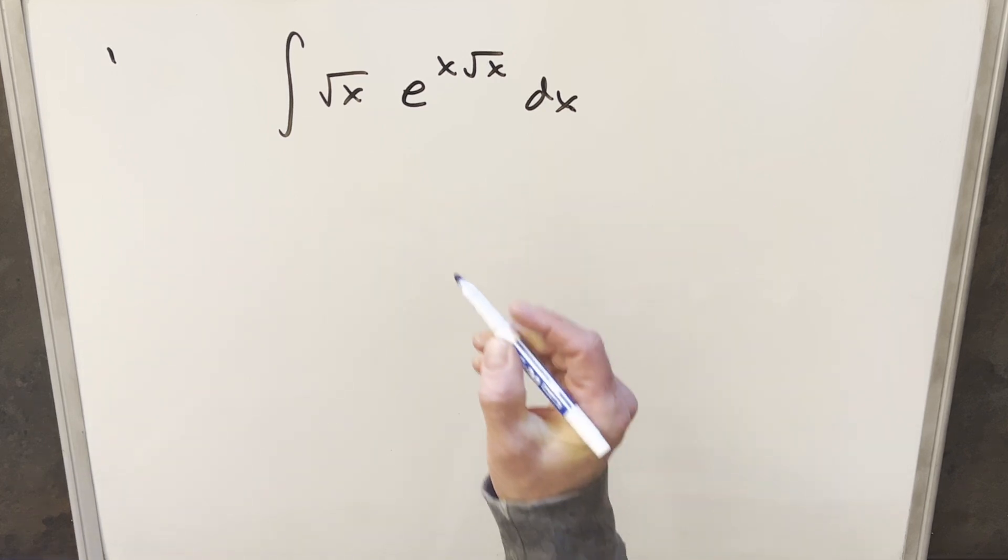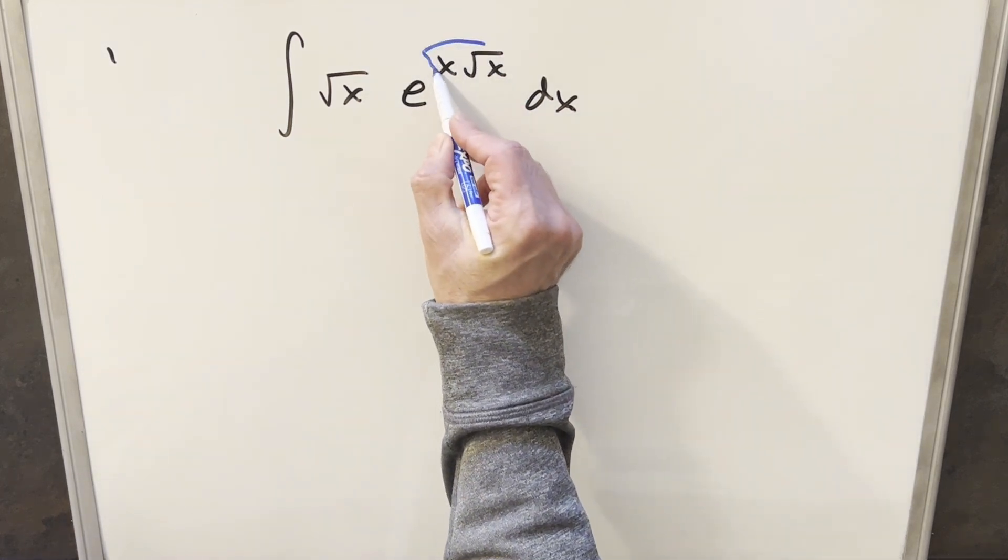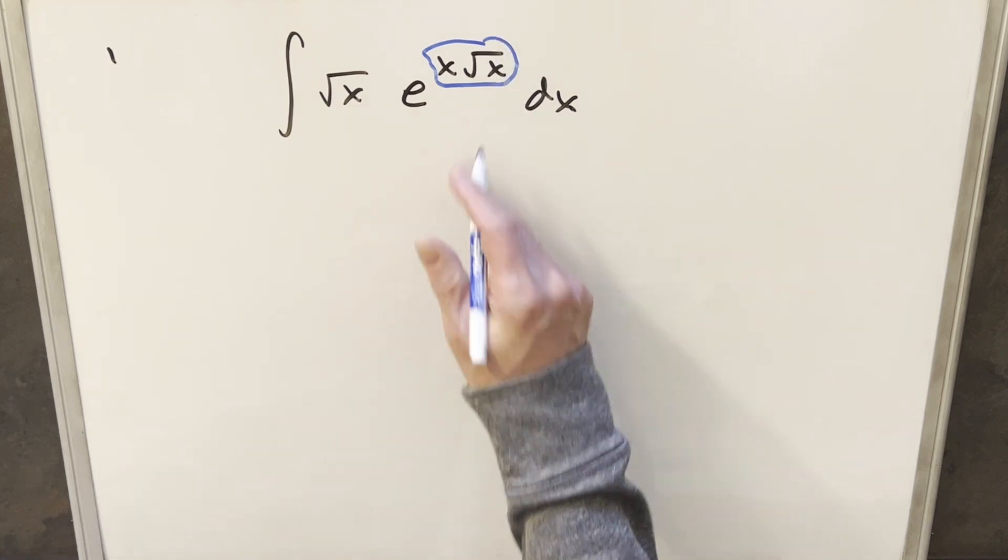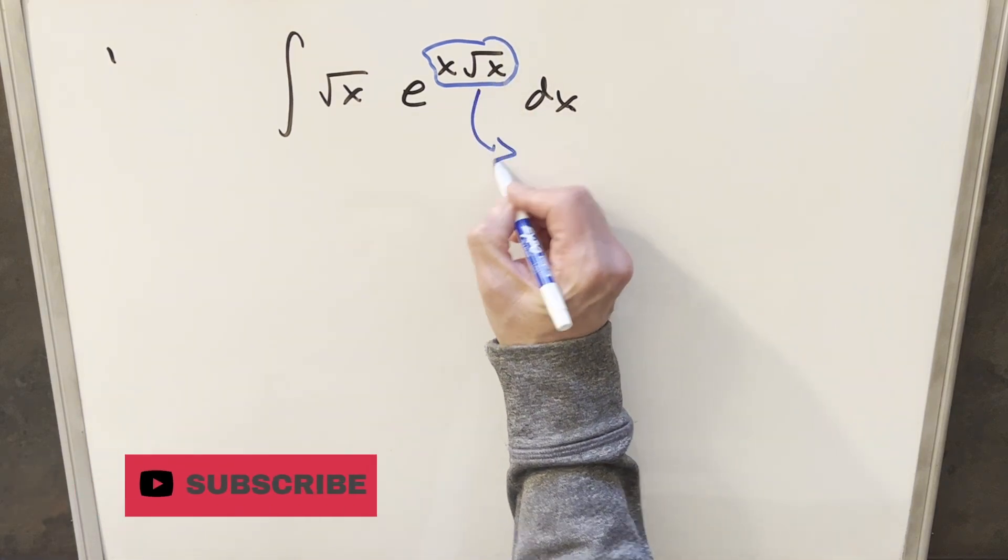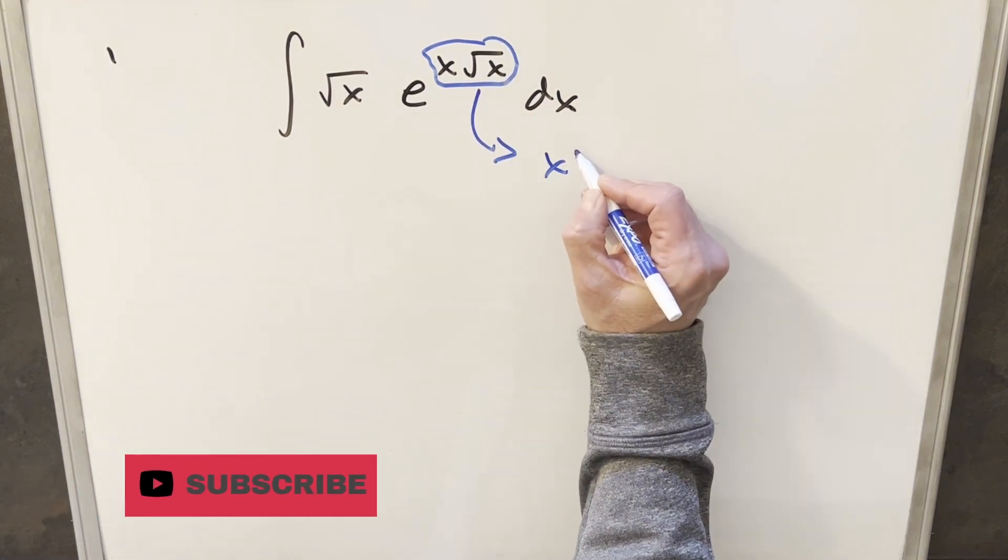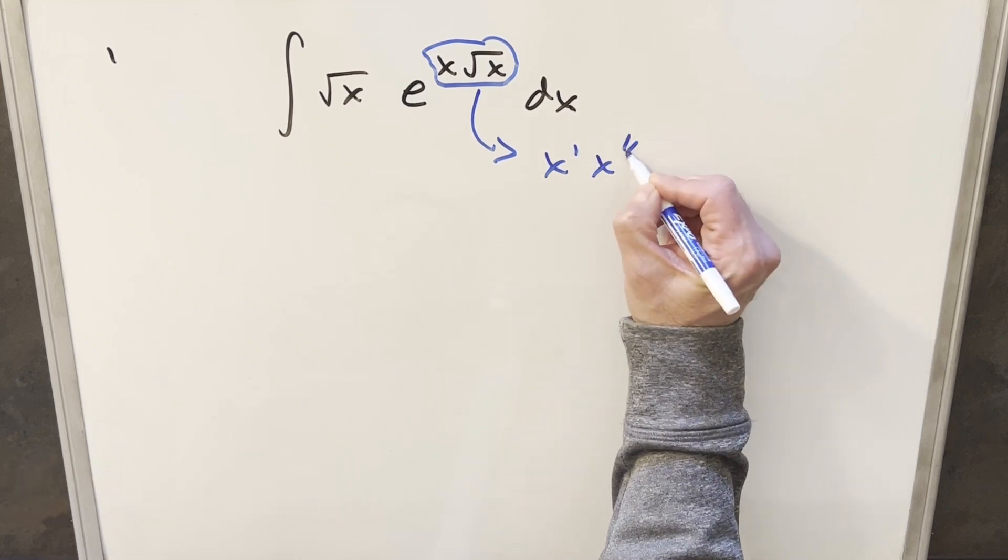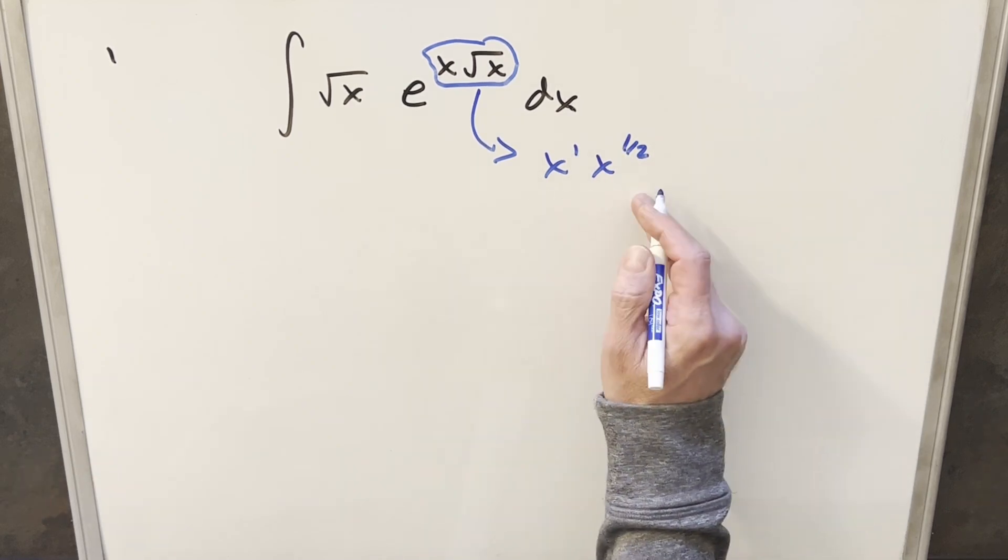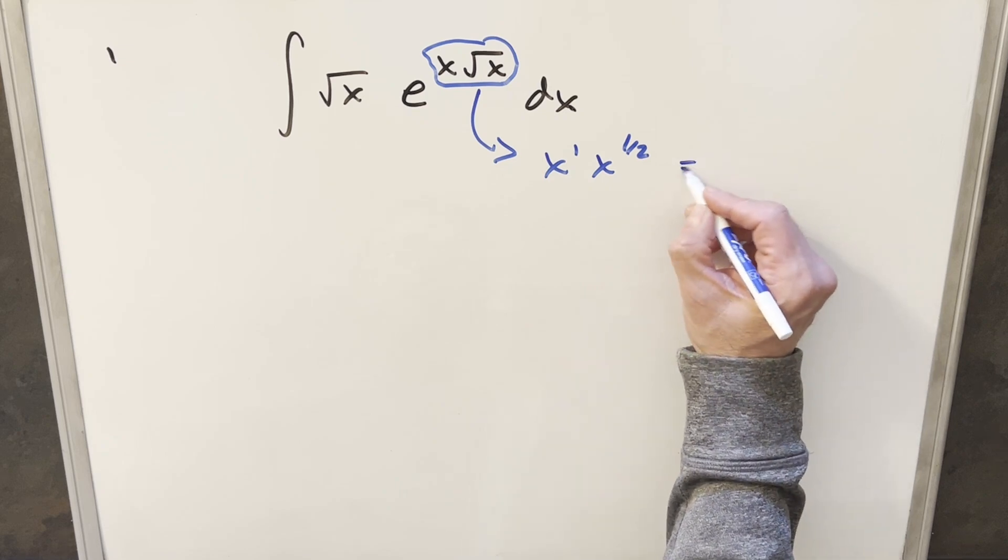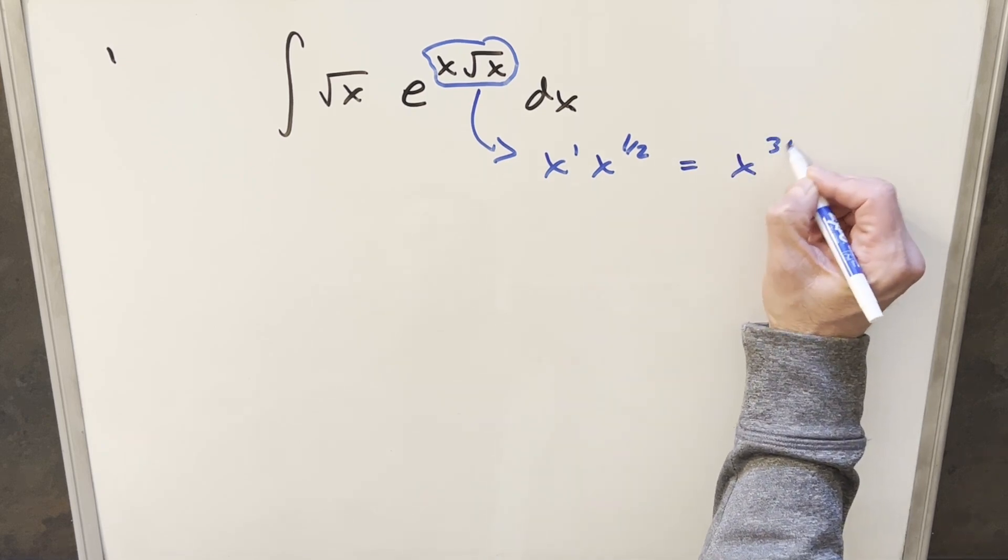Okay, to get started with this, what I want to do first is I think I just want to do something to simplify. I just want to simplify this exponent over here. Let's just take a look at this. If I write this, we can write it as x to the 1 times x to the 1 half. And then if we multiply these together, we can combine the exponents and we can write this as x to the 3 halves.